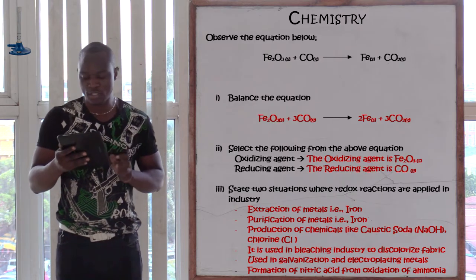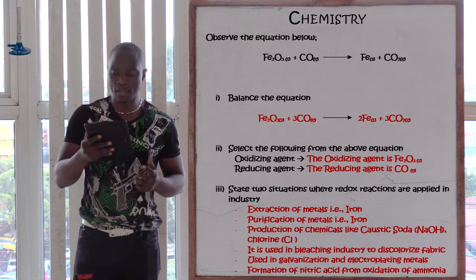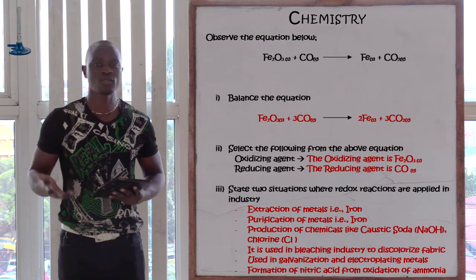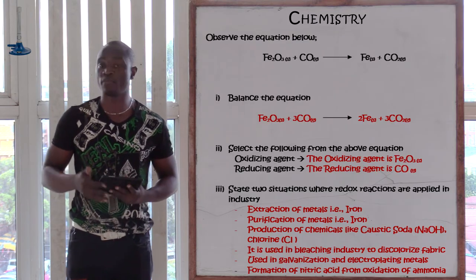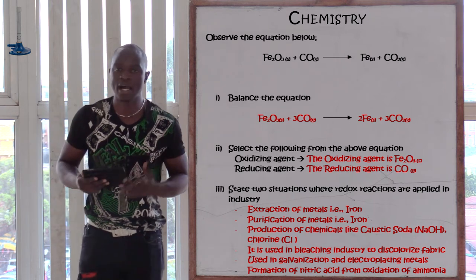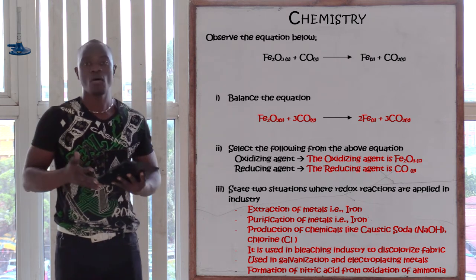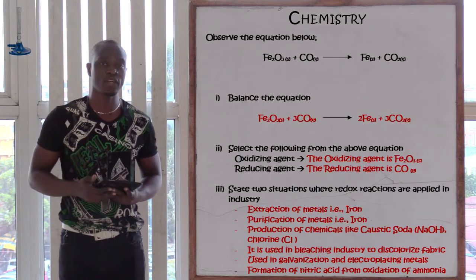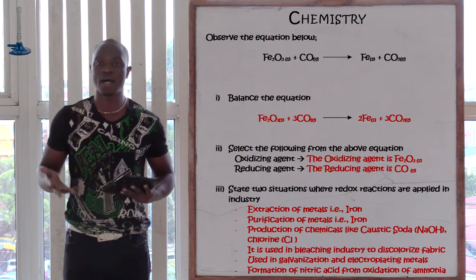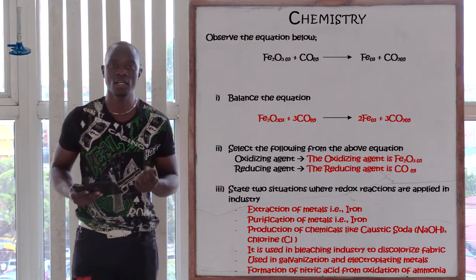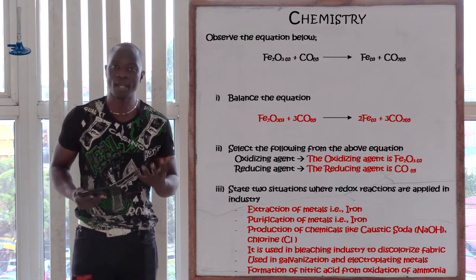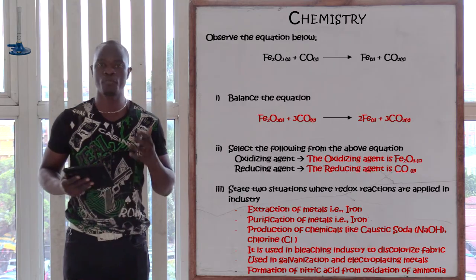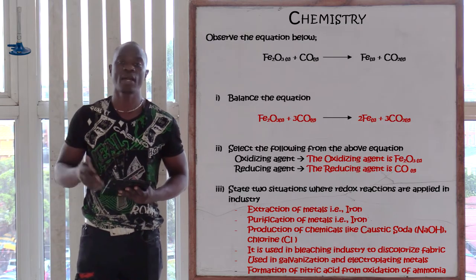The next question is: state two situations where redox reaction is applicable in industry. First, we have the extraction of different metals from their metal ores — for example, extraction of iron. Second, we have purification of different metals — after extracting a metal such as iron in the blast furnace, the redox reaction is used again to purify it. We also have electroplating as another industrial application of redox reactions.